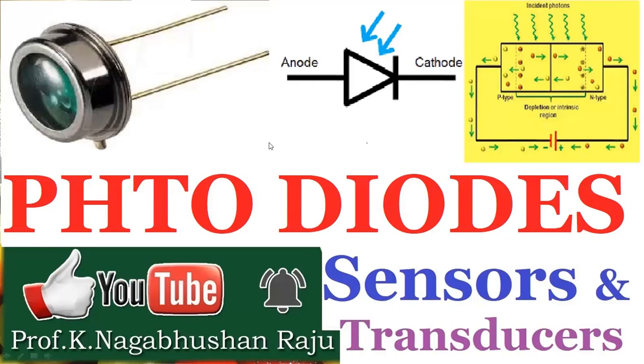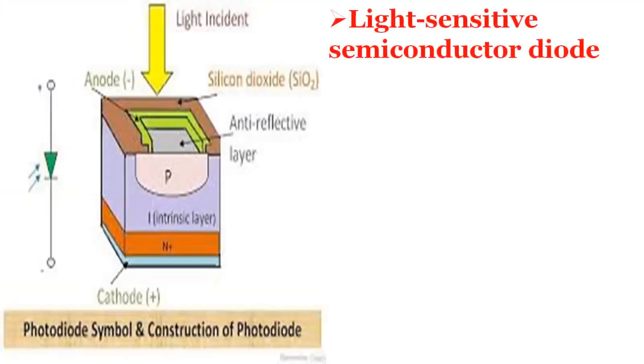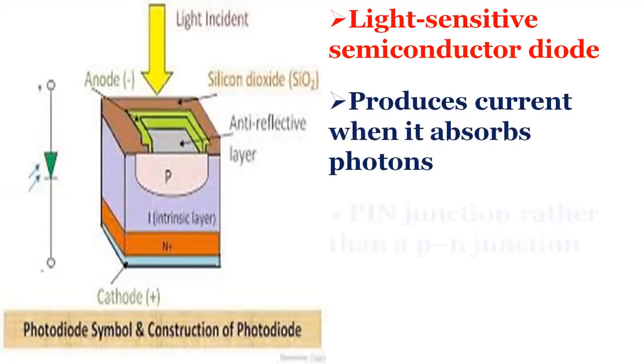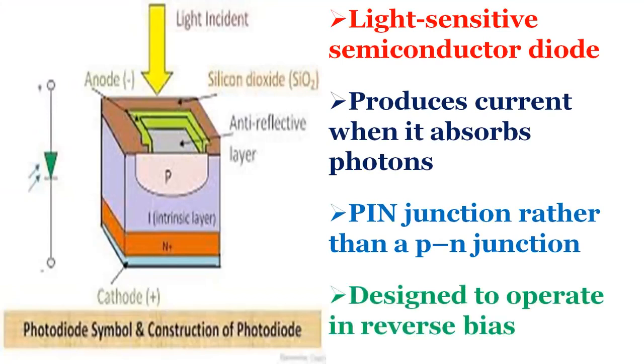A photodiode is a light-sensitive semiconductor diode which produces current when it absorbs photons. The package of a photodiode allows light, infrared, ultraviolet radiation, or x-rays to reach the sensitive part of the device. The package may include lenses or optical filters. Devices designed for use as a photodiode use a PIN junction rather than a p-n junction to increase the speed of response.